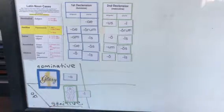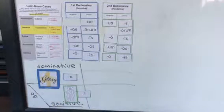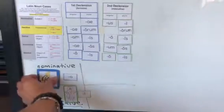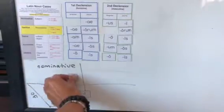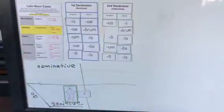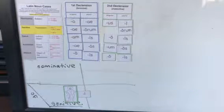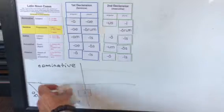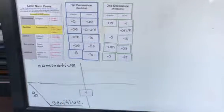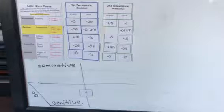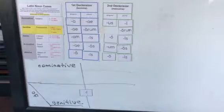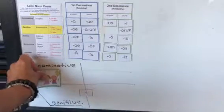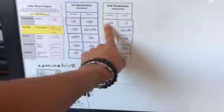So gloria Dei translates into glory of God. Number two. Number two is amicus servi. Amicus servi. So your subject is friend. Amicus. Amicus. It's going to be singular.